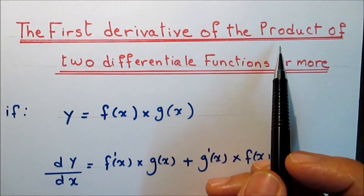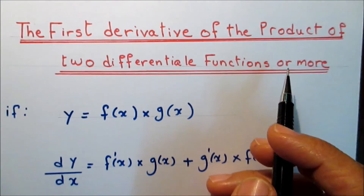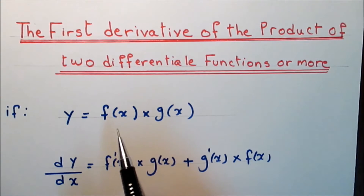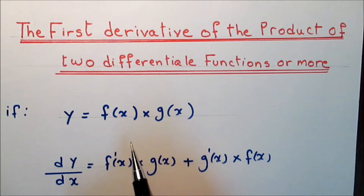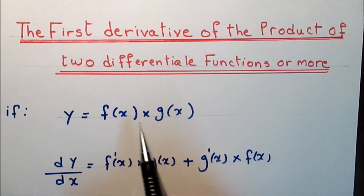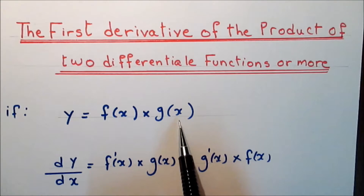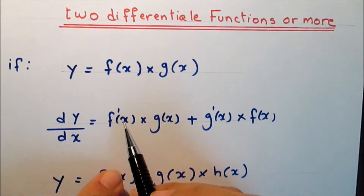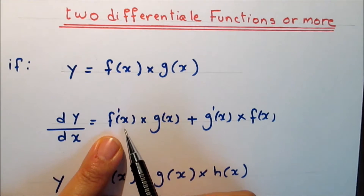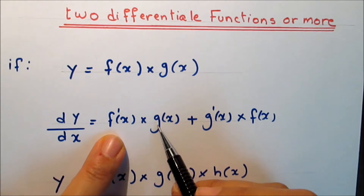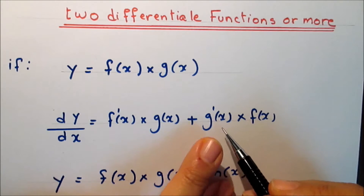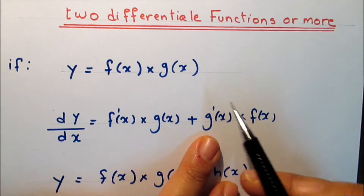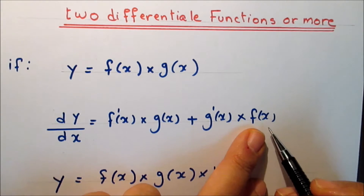Now we're going to take the first derivative of the product of two differential functions or more. If f and g are two differentiable functions with respect to x, and y equals f(x) times g(x), then dy/dx equals the derivative of the first, f', times the second function g, plus the derivative of the second, g', times the first function f.